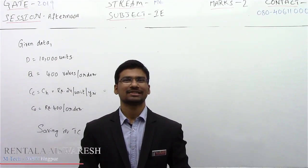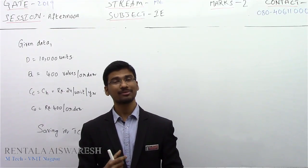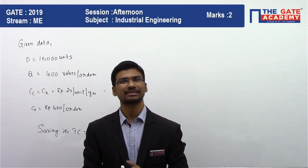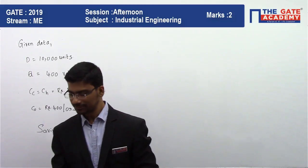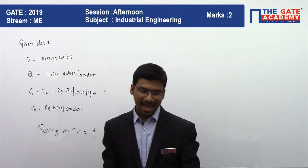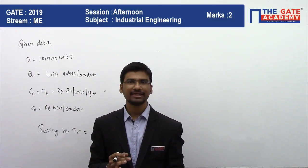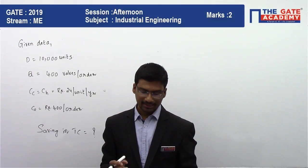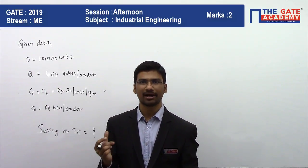Hello students, this is Aishwaresh. In this video we will be solving a question from the subject industrial engineering, and the chapter is inventory control. The annual demand of valves per year is 10,000 units, and the current order quantity is 400 valves per order.